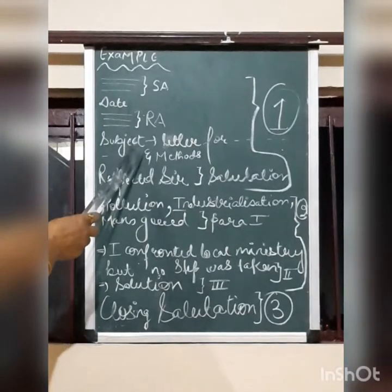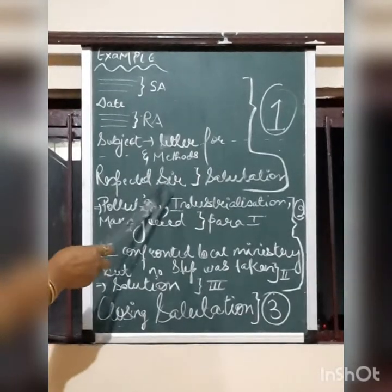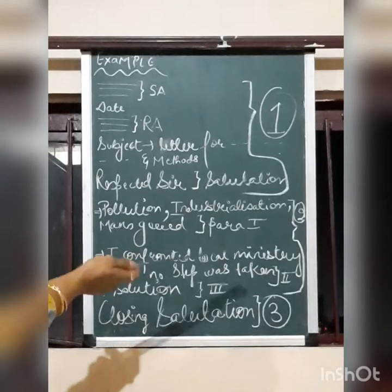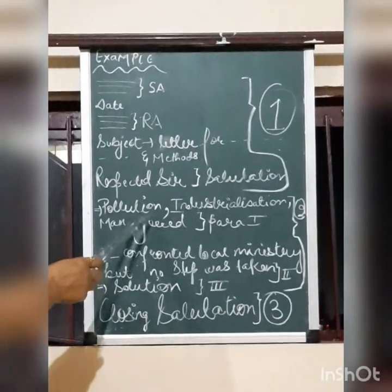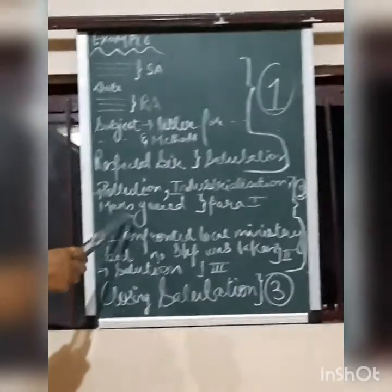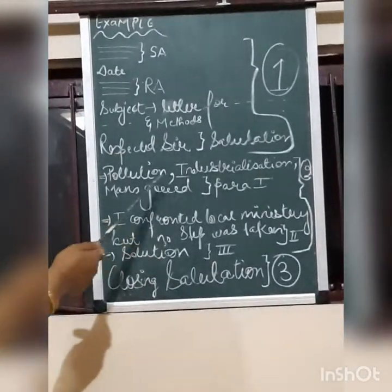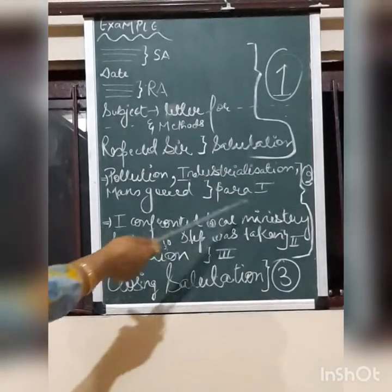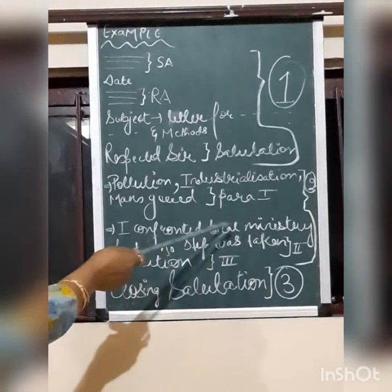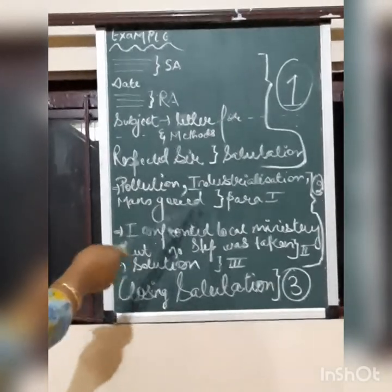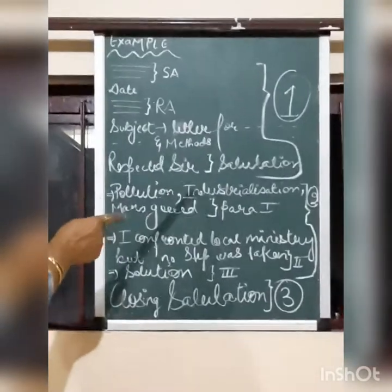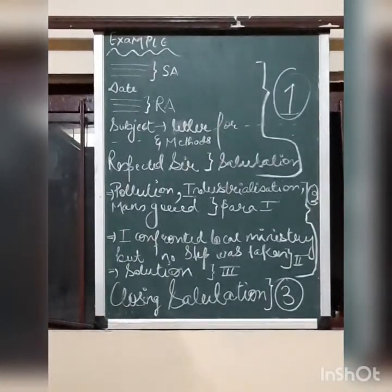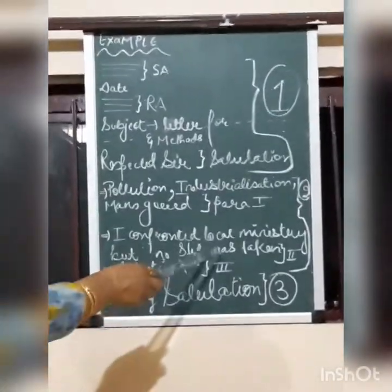Then comes the subject, then 'Respected Sir.' As I have already told you, you have to write something in praise of the newspaper, and then comes your causes. In the causes I have written: pollution, industrialization, and man's greed. These three points can be covered in the first paragraph — how these three important points are affecting the earth and supporting the degradation of the earth. Then in the second paragraph, I confronted the local ministry but most steps were taken.